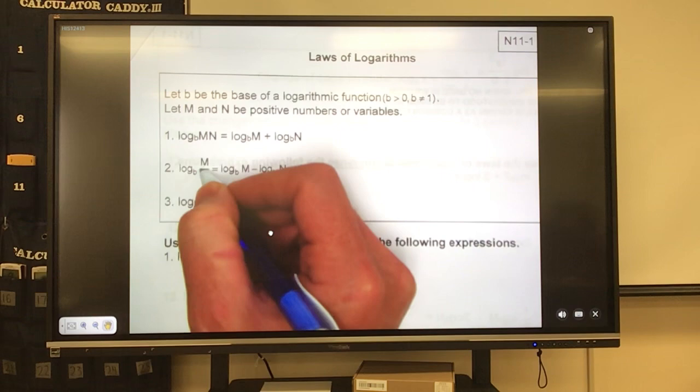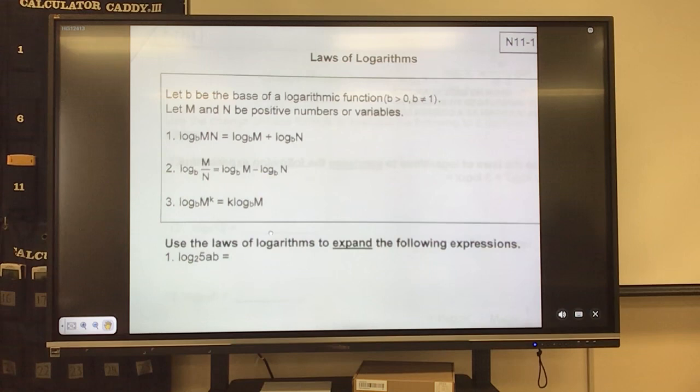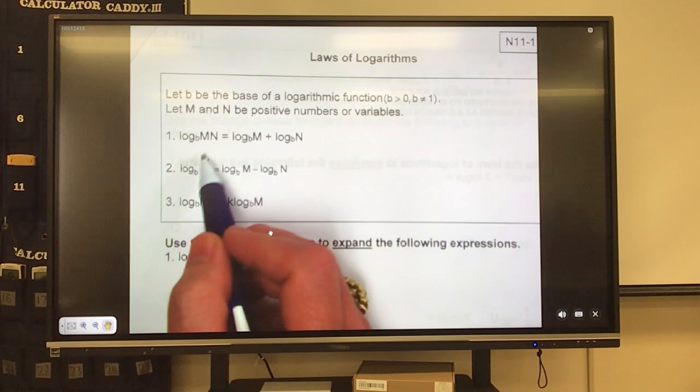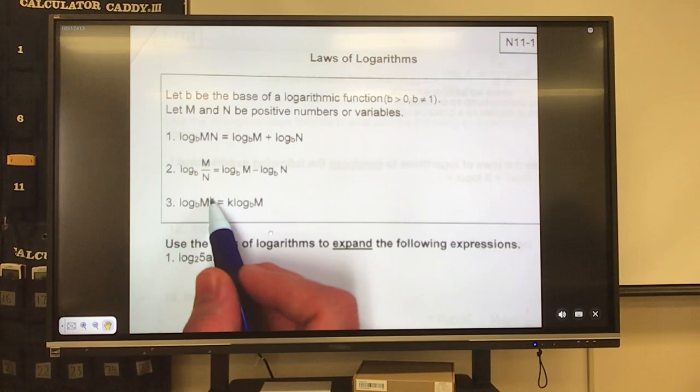So it would be log base b of M minus log base b of N. Now it would be written like that. So this can be written like this. If I had this, I could make it - this is called condensing when I go back. Expanding when I go here because it's getting bigger, and condensing when I take this and go backwards. If it's raised to a power, always put the power in the front. So this would be log base b of M raised to the k power. So I would take that k, slide it to the front.